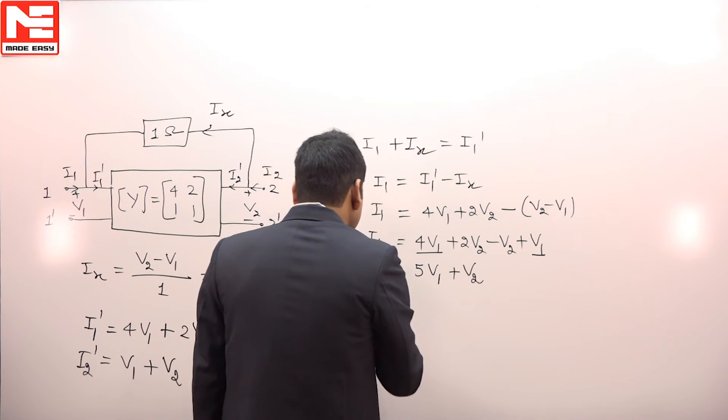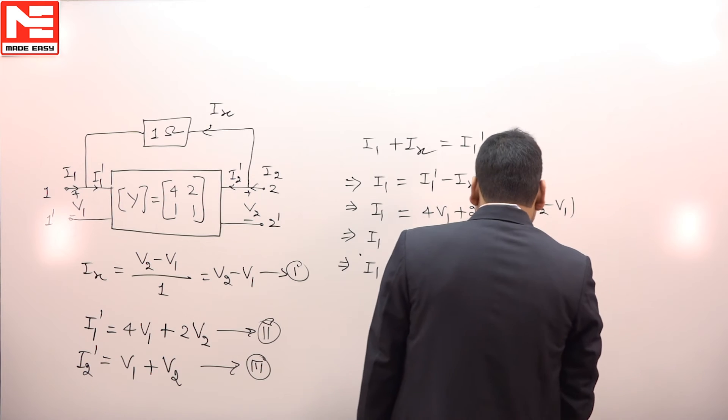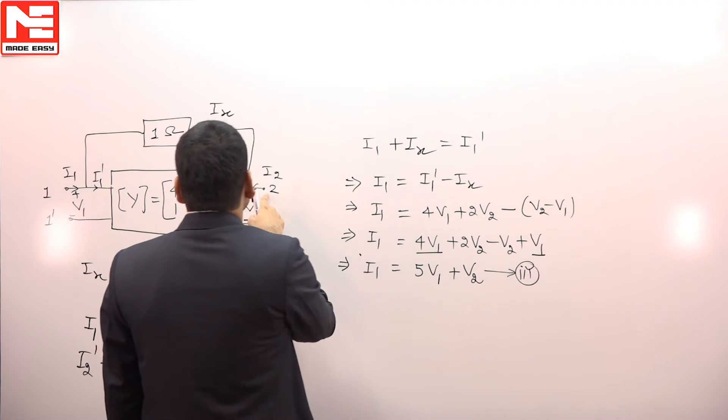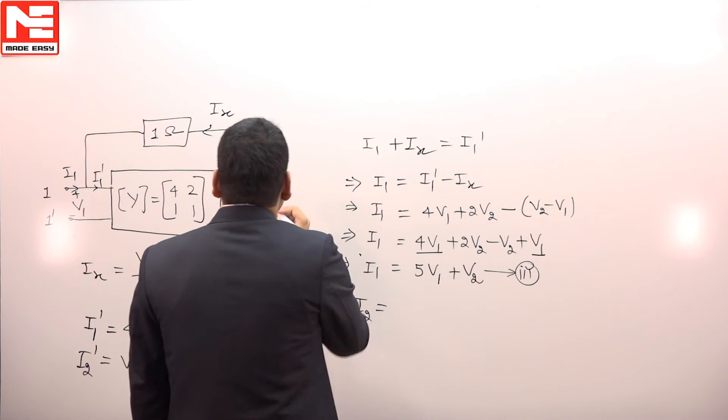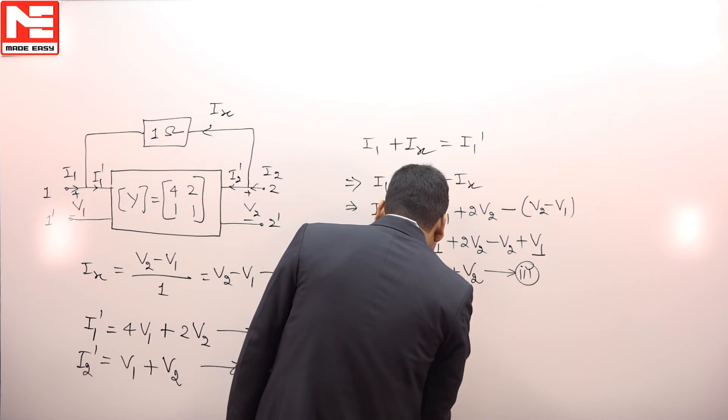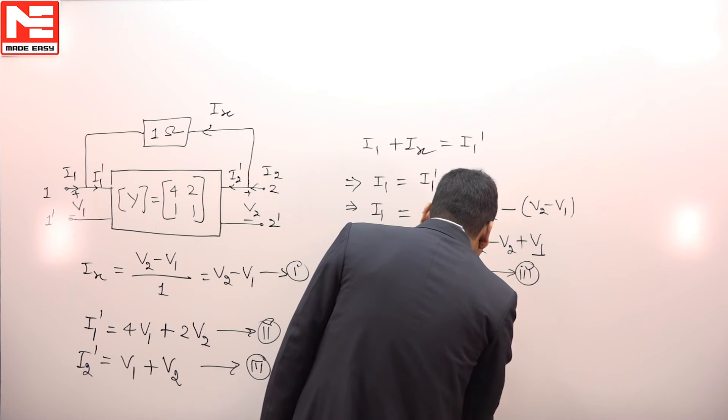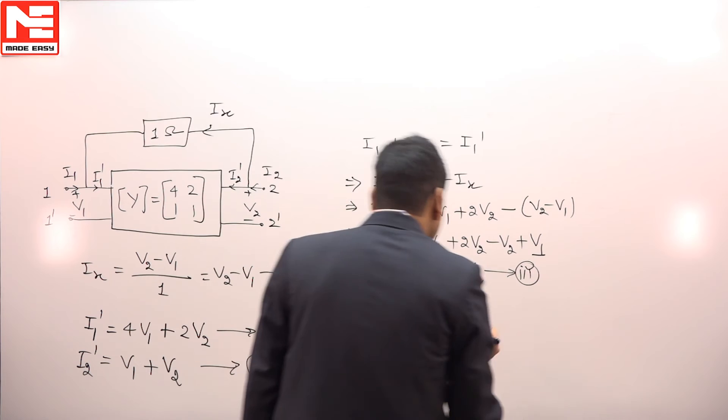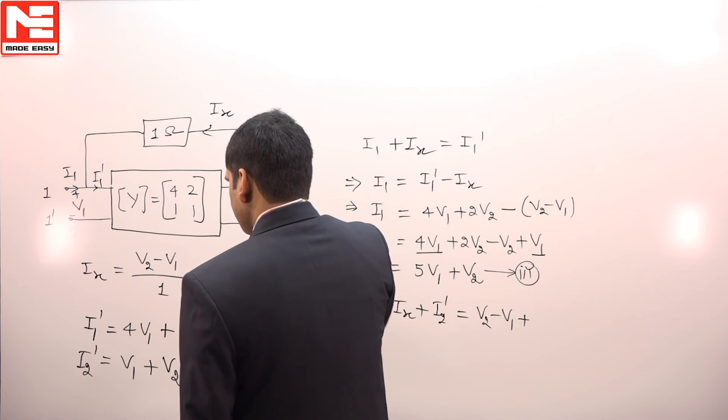Similarly, i2 can be written as i2 equals i2 dash plus ix outgoing. i2 can be written as ix plus i2 dash. We are having ix equals V2 minus V1 and i2 dash is equal to V1 plus V2.